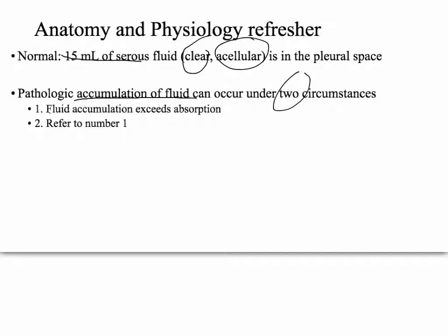Pathological accumulation of fluid can occur under two circumstances. The first is fluid accumulation exceeds absorption — basically the fluid coming in from the vessels is exceeding the fluid going out through lymph drainage. That is the way you would get a pleural effusion.